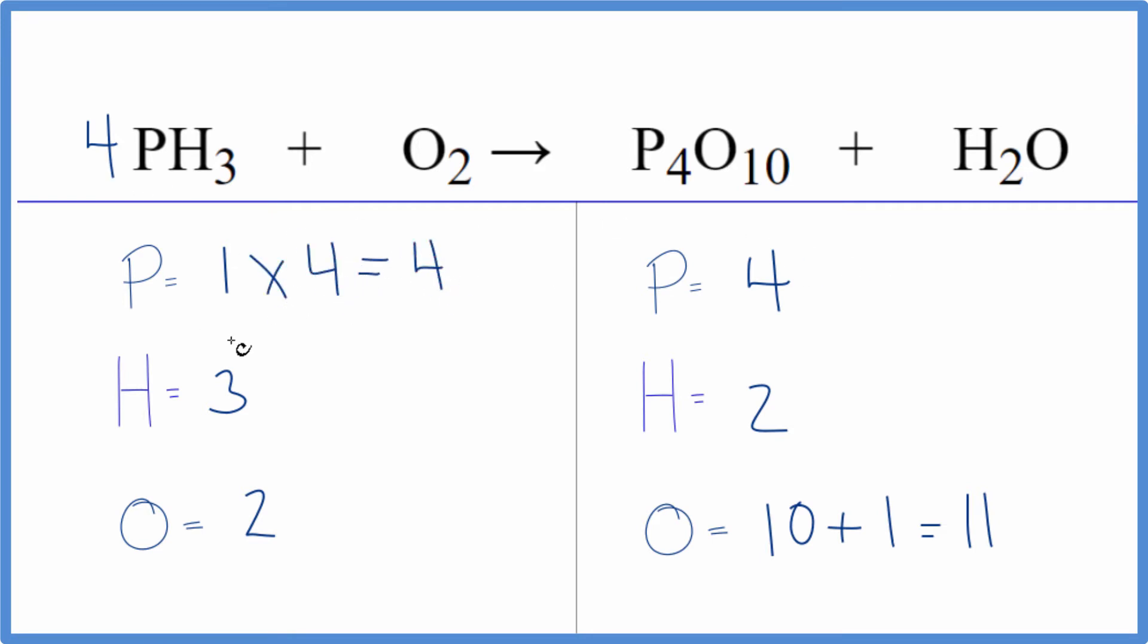3 times 4, now we have 12 hydrogen atoms. We could put a 6 in front of the water here. We'd have 2 times 6.